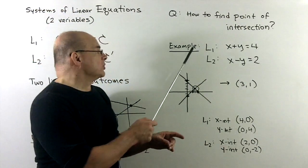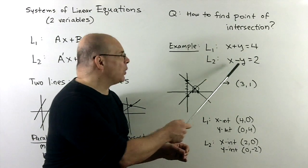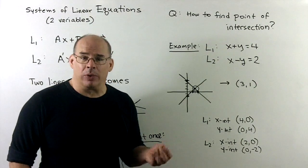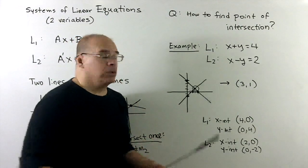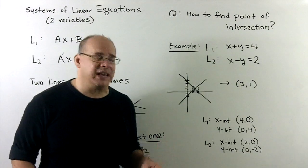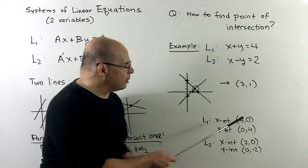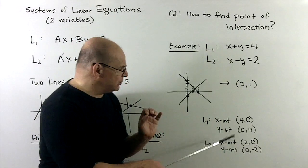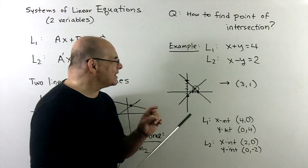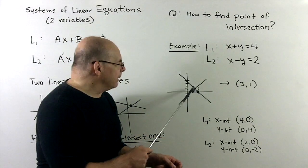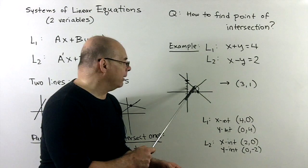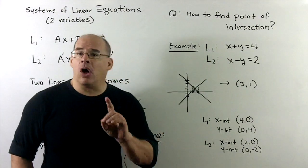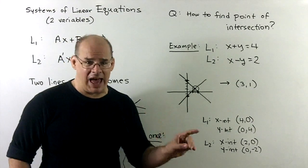Let's look at an example. Suppose we have the lines x plus y equal to 4 and x minus y equal to 2. How do I find the point of intersection? One thing we could do is draw the lines and try to guess. For the first line, the x and y intercepts are (4,0) and (0,4). For the second line, the intercepts are (2,0) and (0,-2). Looking at the graph, my guess is going to be (3,1). But that's a guess — how can we be sure, and how can we get this answer without drawing the lines?